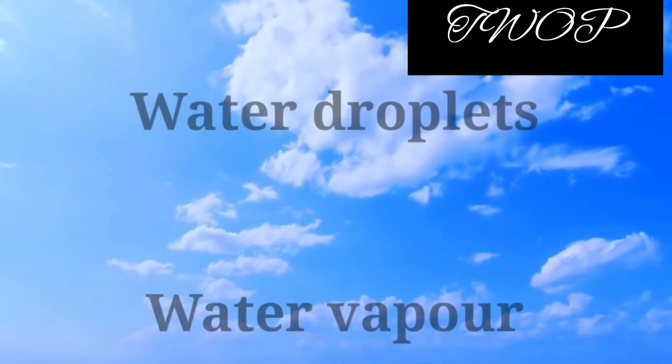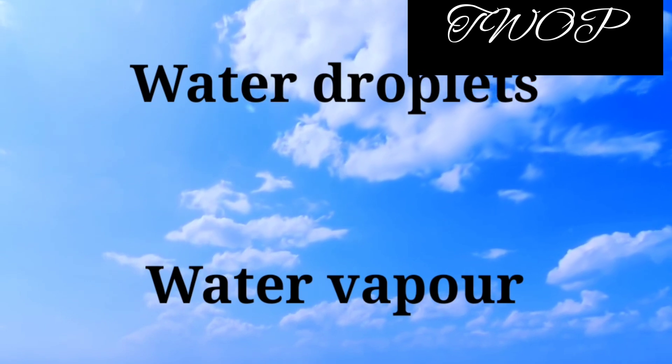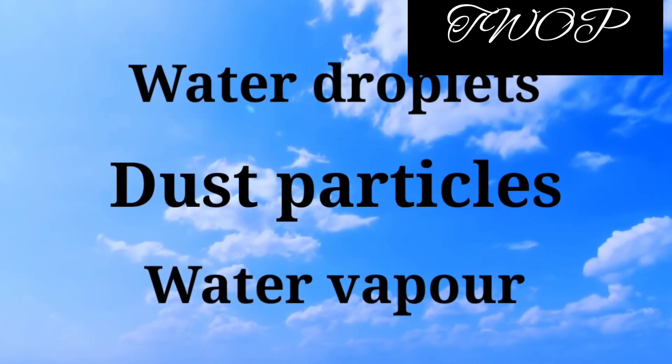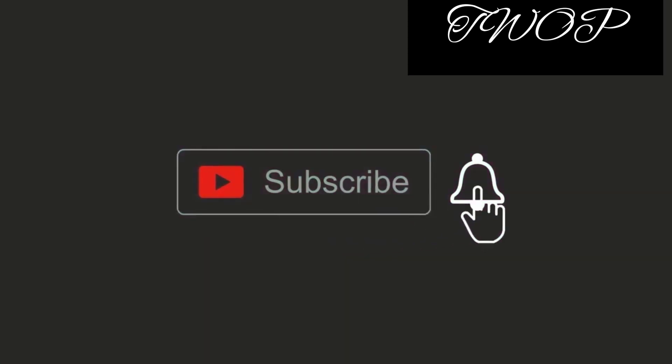When light rays enter the remaining components of the atmosphere — water droplets, water vapor, and dust particles — they don't scatter. This is because their wavelengths are larger than that of light. This is why clouds are always white: when light enters them, it just comes out the same way it entered, because the wavelength of the water droplet is larger than that of light. Please subscribe to the channel for more.